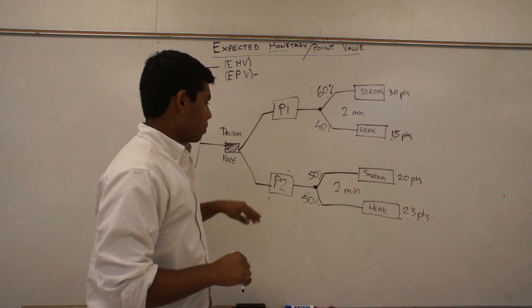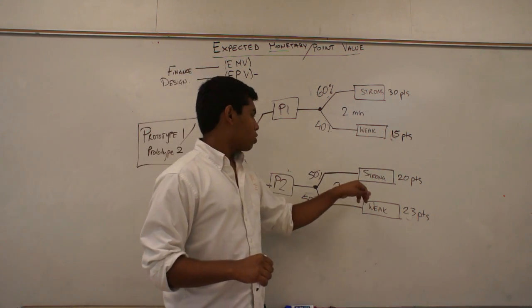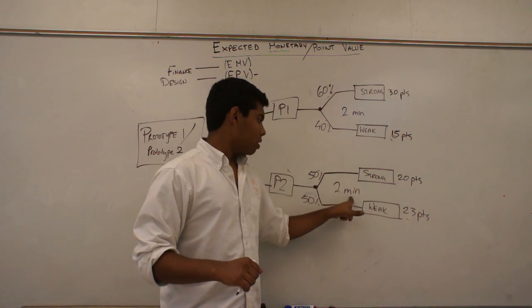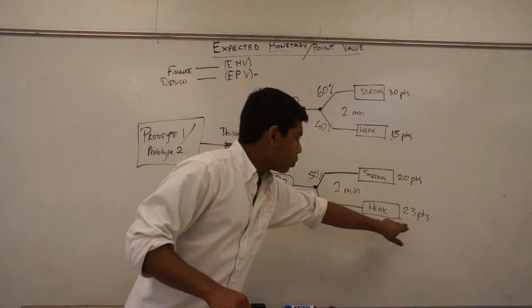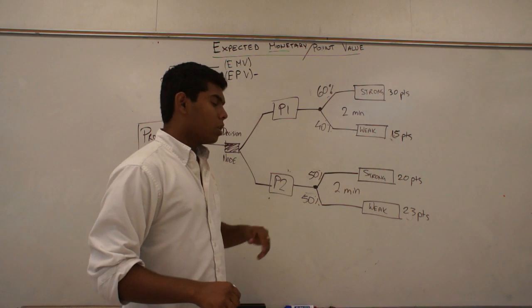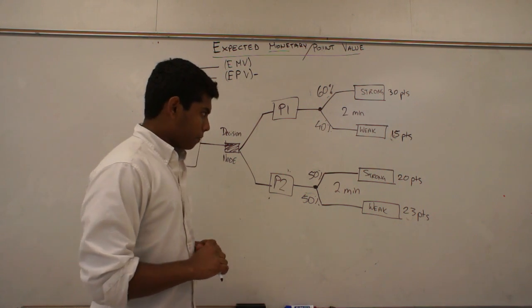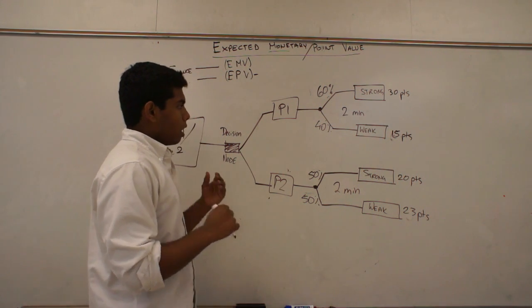Whereas, if I look at prototype two, in its strongest, it can make 20 points in two minutes. Whereas, it can make 23 points in its weakest moment. So, which one should I pick?